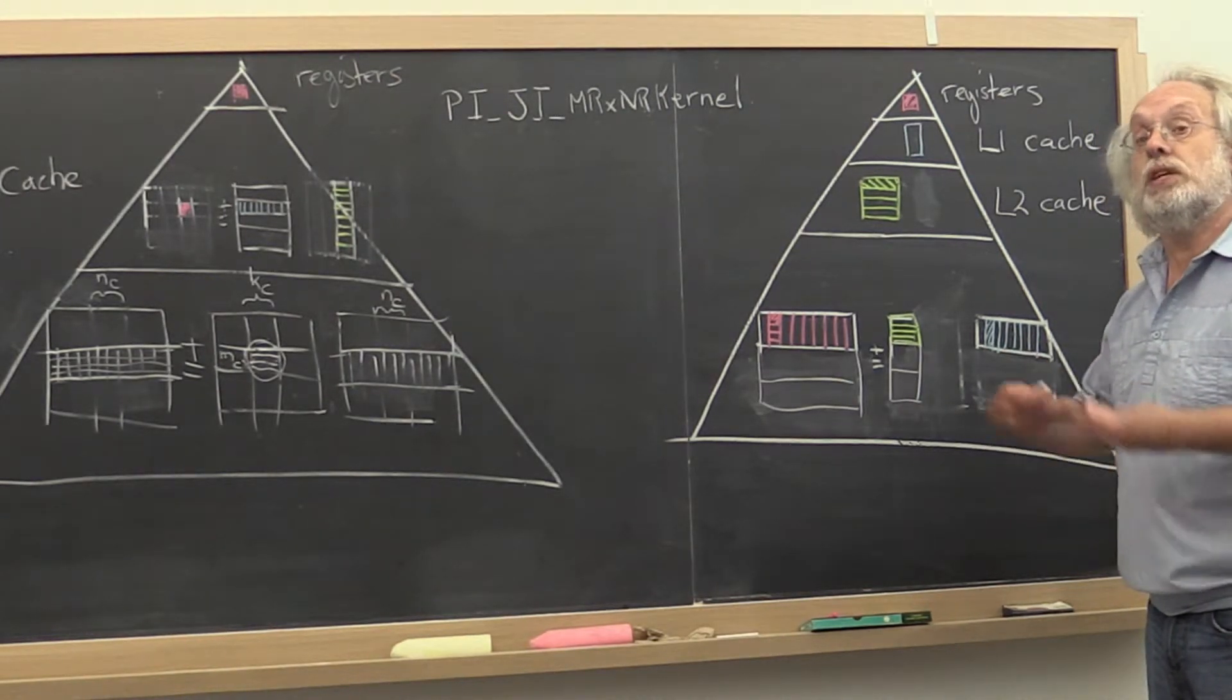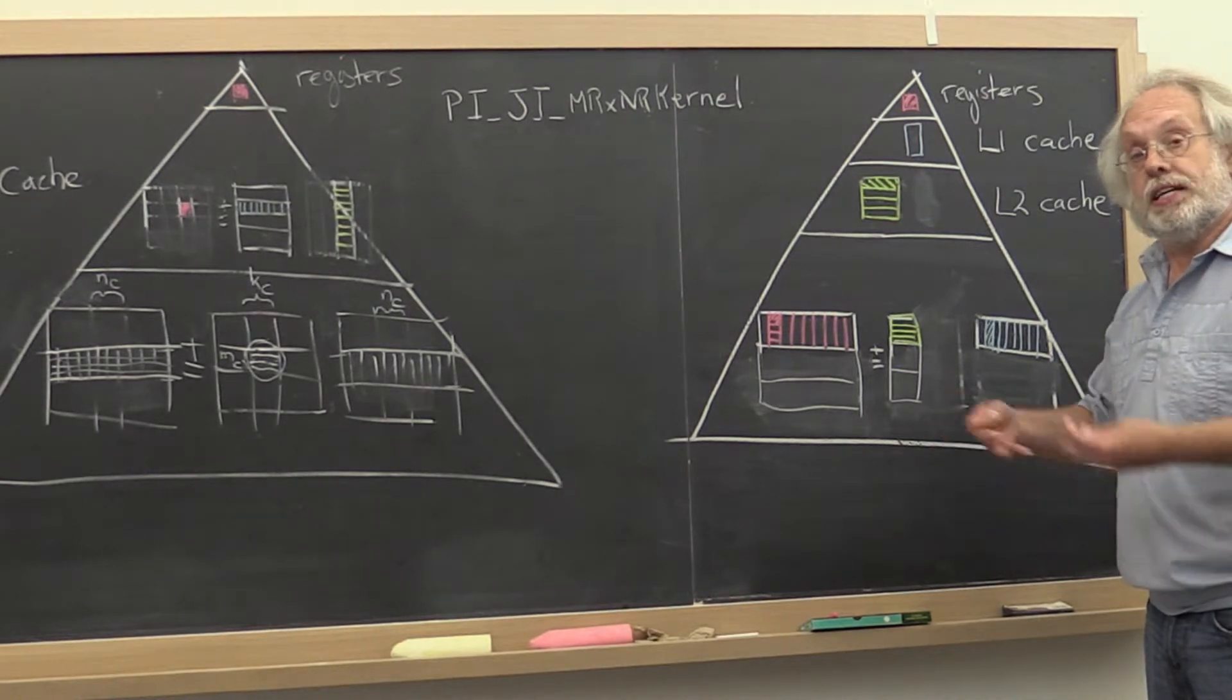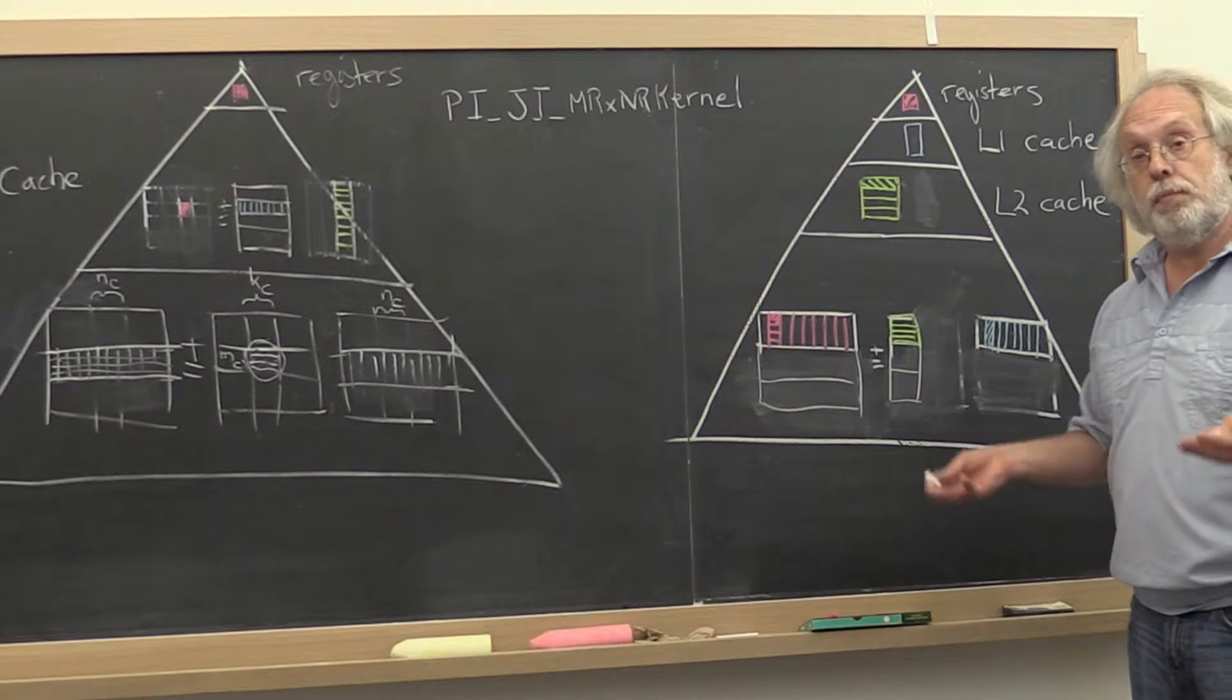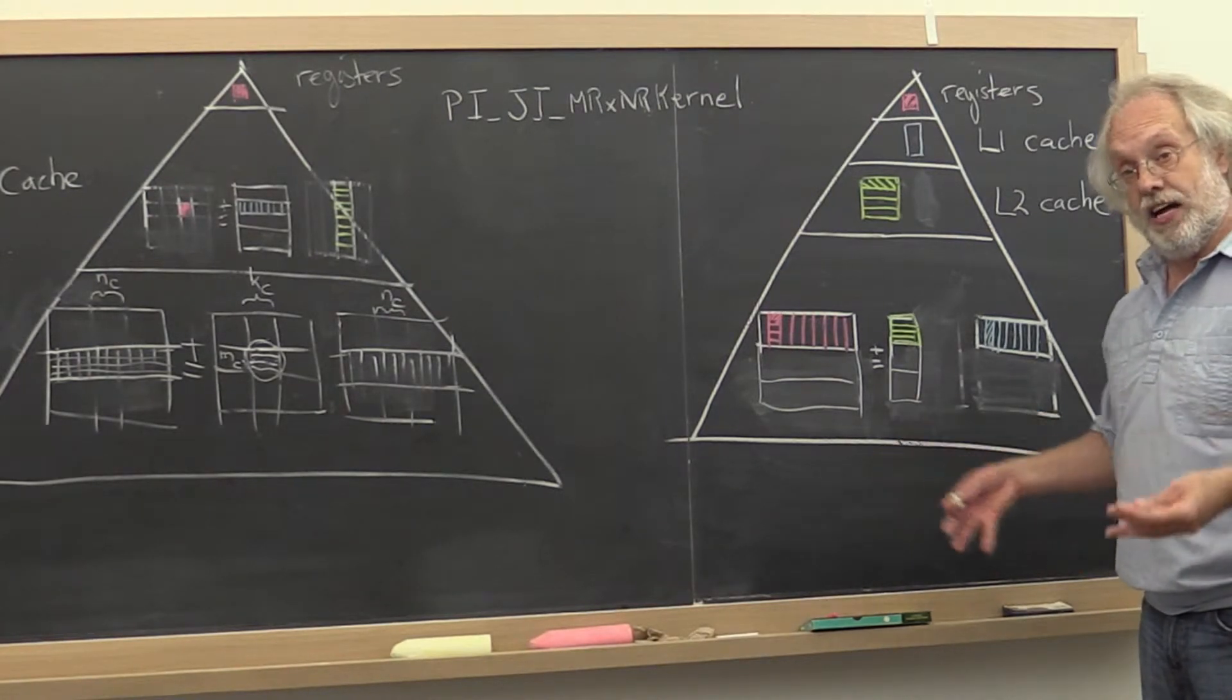Data that gets reused should be placed in caches. But this row panel is pretty big, so we need to place it in a pretty big cache.